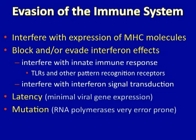Since viruses have co-evolved with human beings from the very beginning of our species, it's not surprising that they have acquired some capacity to interfere with the immune response and prevent their clearance. For example, some viruses — HIV being a good example — have the capacity to interfere with the expression of viral antigens with MHC molecules. By preventing the viral antigen from being expressed on the surface of the cell, the immune response is also prevented.